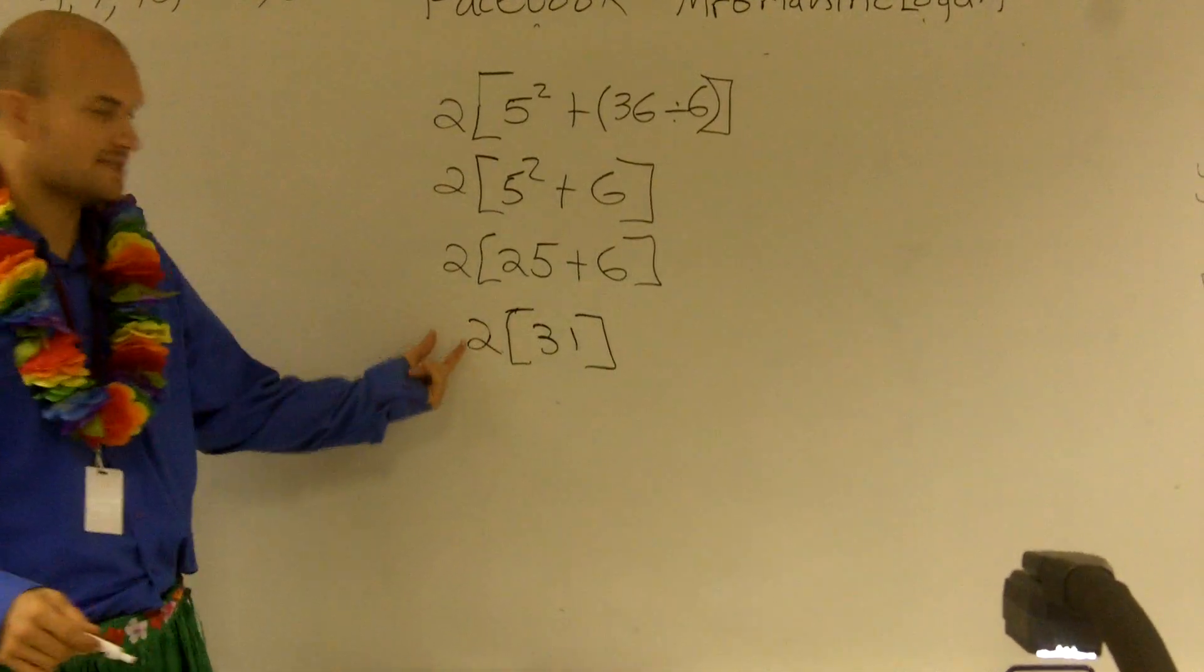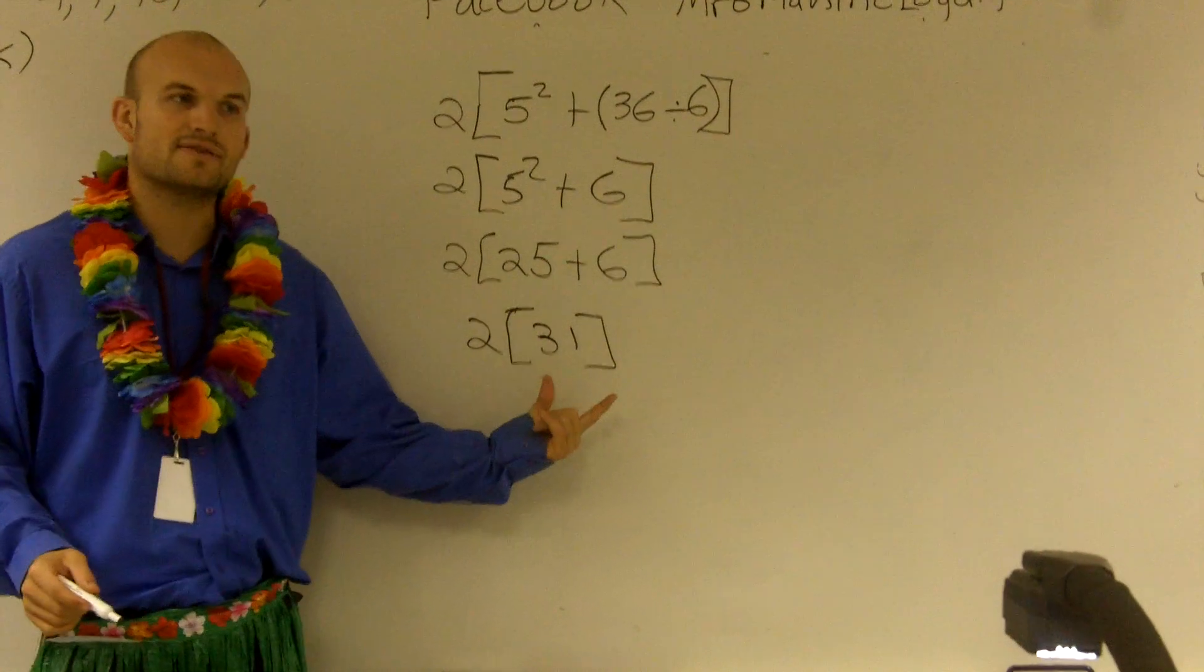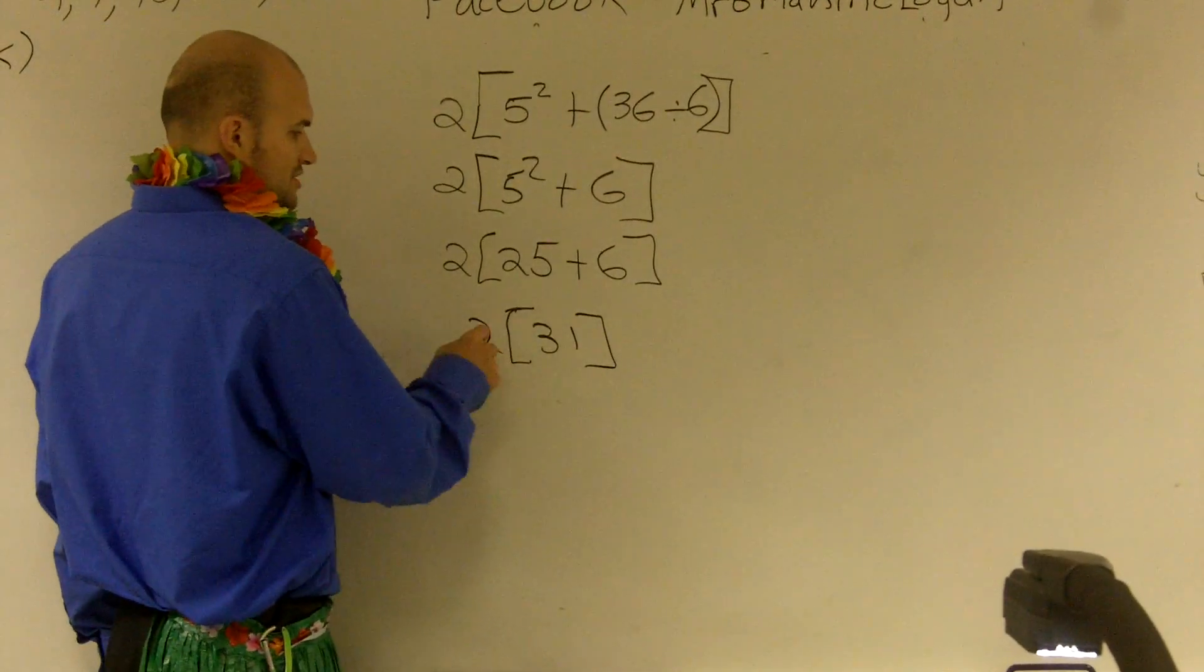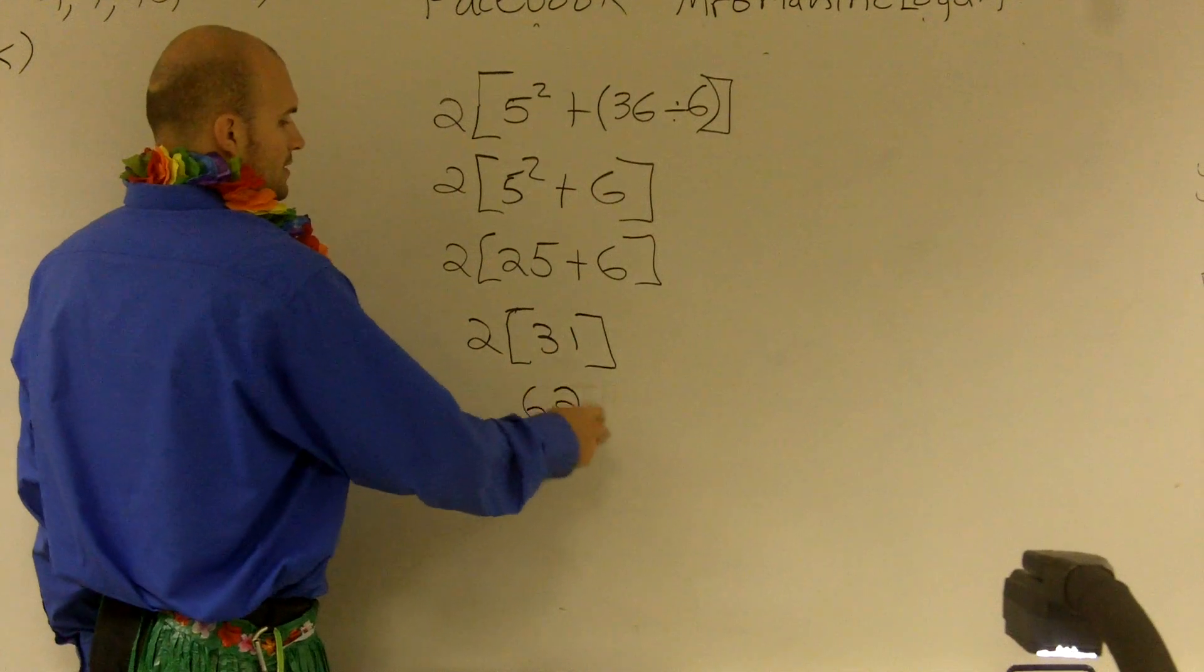Now remember, when we don't see an operation, we have two outside parentheses or two next to a variable, we're going to use multiplication. So 2 times 31 equals 62.